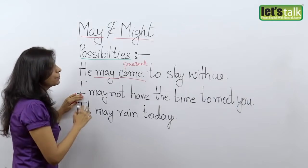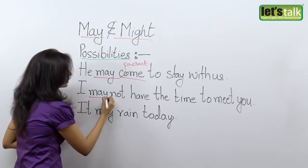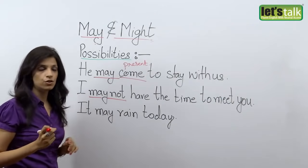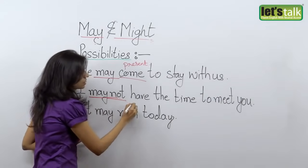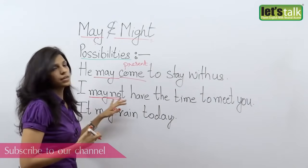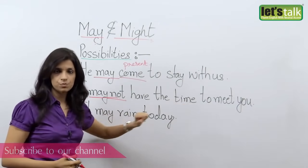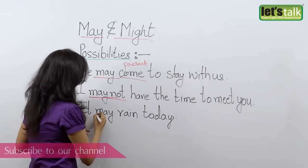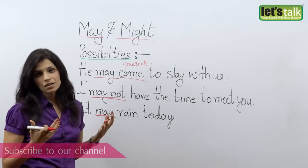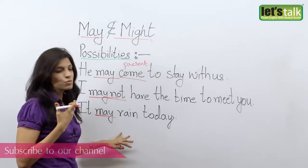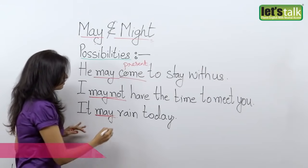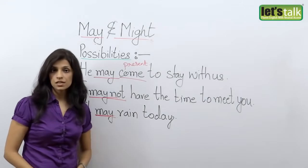In my next example, 'I may not have the time to meet you.' When you want to say something negative, you say may not — it's a possibility that I may run out of time and won't be able to meet you. In my third example, 'It may rain today.' Your mother tells you to take your umbrella because it's kind of dark, the clouds and weather seem like it's going to rain. So you say, 'Take your umbrella, it may rain today.' There are chances of it raining today.